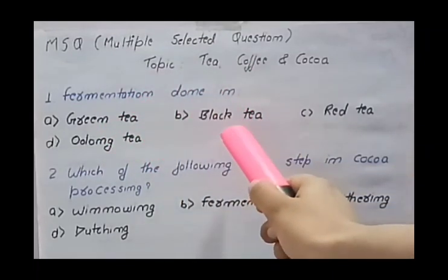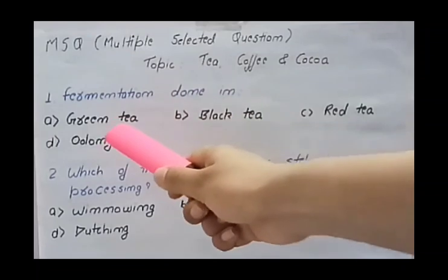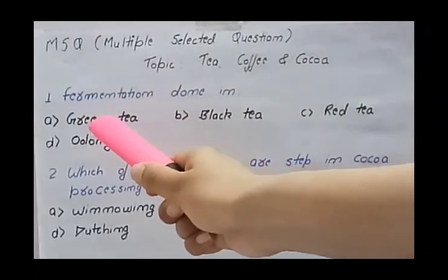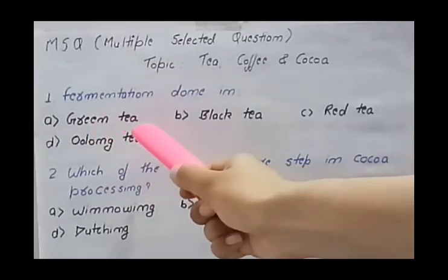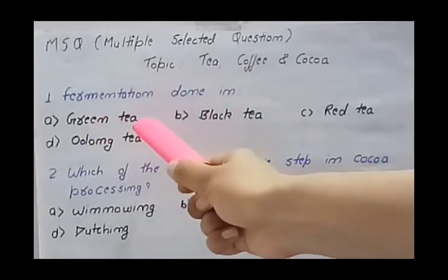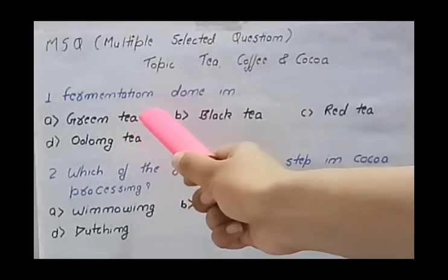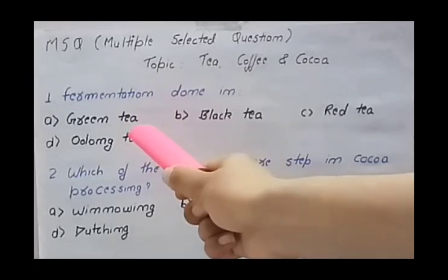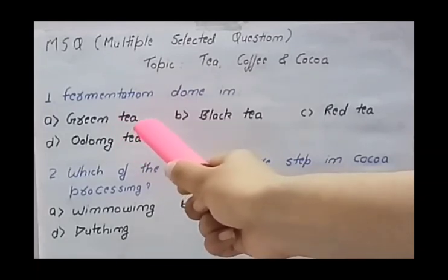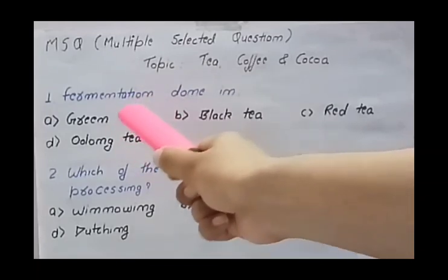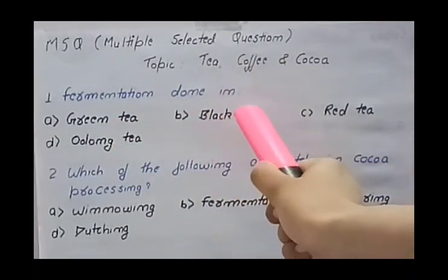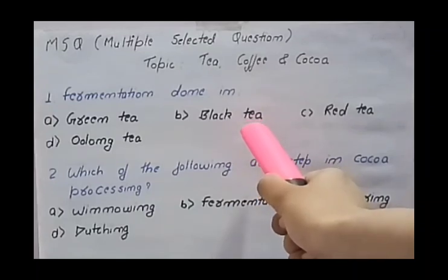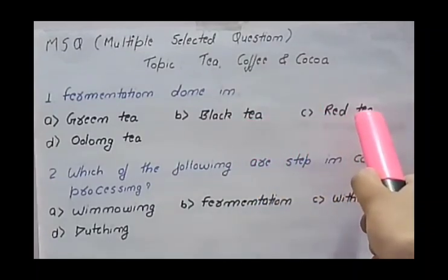Let me explain one by one. First option is green tea — in green tea there is no fermentation, because during green tea processing the first step is steaming. Steaming deactivates the enzyme polyphenol oxidase, which is responsible for fermentation. So in green tea there is no fermentation. Next option is black tea — yes, in black tea fermentation is done. In red tea also, fermentation is done.